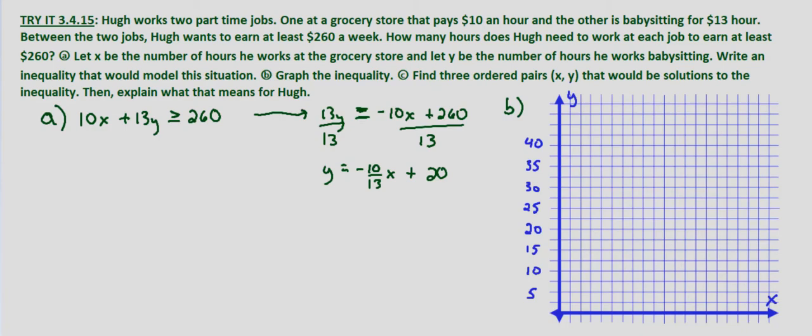And we'll do the same thing in the X direction: 5, 10, 15, 20, 25, 30, and so forth. Now we know our Y-intercept is 20 because Y equals negative 10/13 X plus 20. That's in slope-intercept form. So we'll put a mark here at (0, 20).